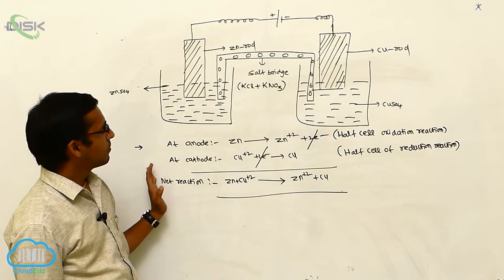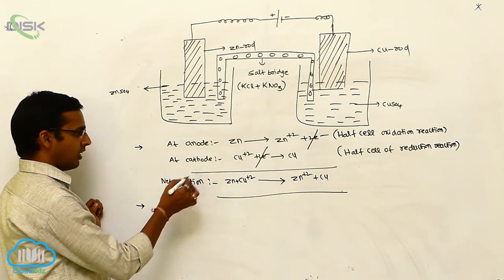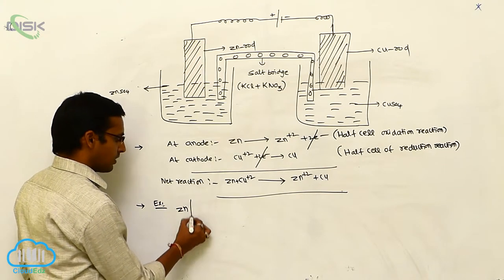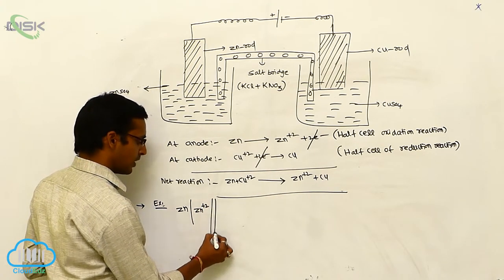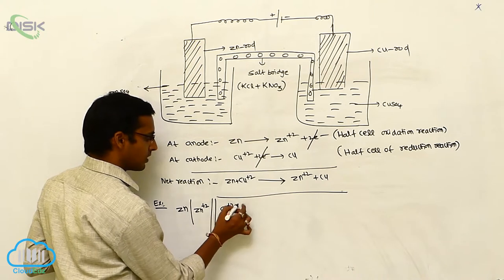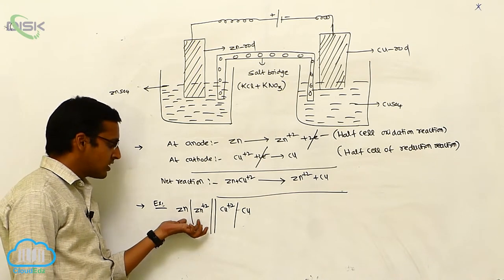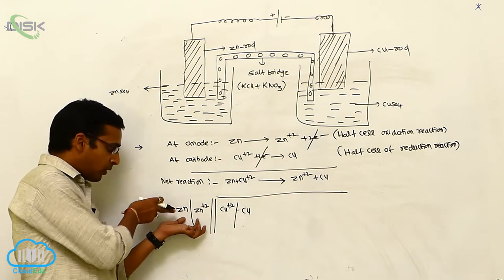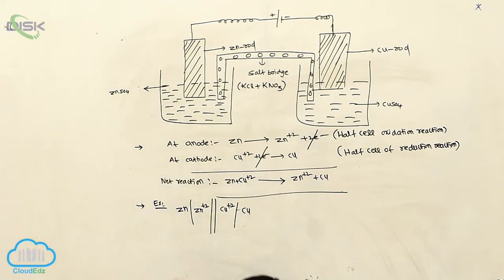This is an example for an electrochemical cell. Generally, an electrochemical cell is represented in notation as: Zn | Zn²⁺ — if these two electrodes are separated by a salt bridge, shown as a double vertical line — then Cu²⁺ | Cu. The first part is the oxidation process and the second part is the reduction process. This is the anode electrode and this is the cathode electrode. This is the representation of the electrochemical cell.